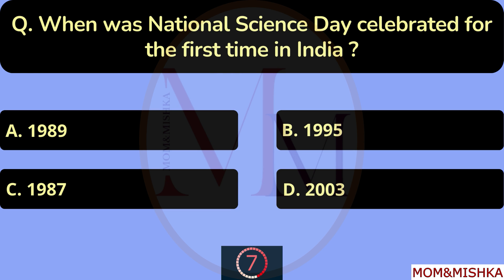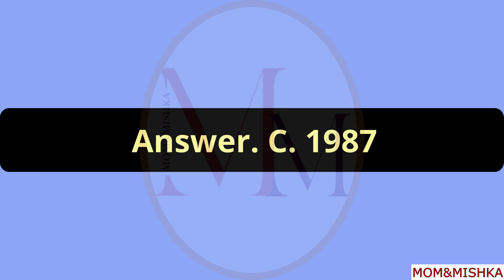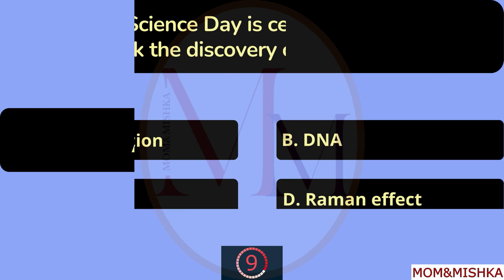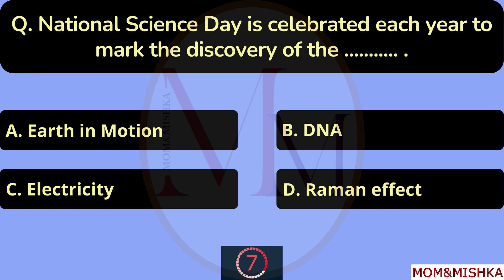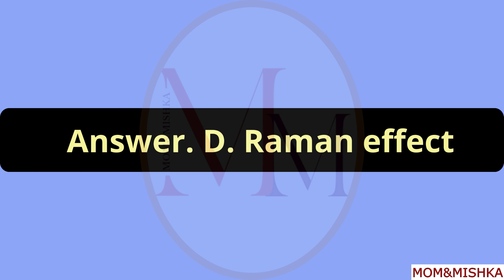When was National Science Day celebrated for the first time in India? In year 1987. Option C. National Science Day is celebrated each year to mark the discovery of the Raman Effect. Option D.